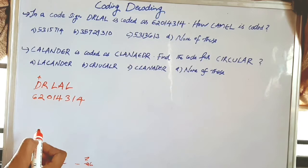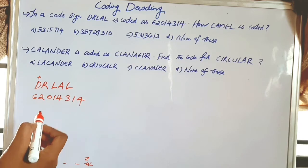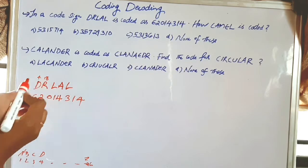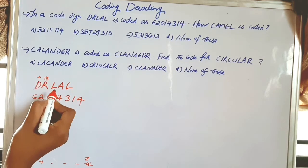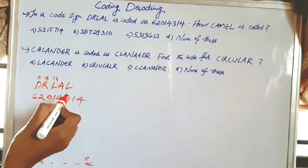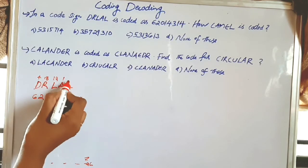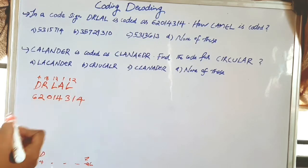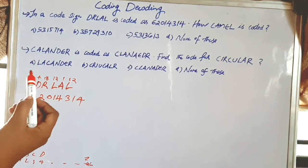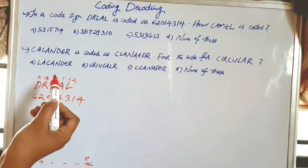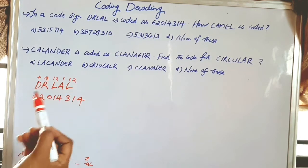R is 18, L is 12, L is 12. So the positional values for DRLAL are: 4, 18, 12, 1, 12.